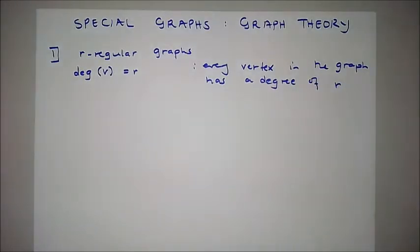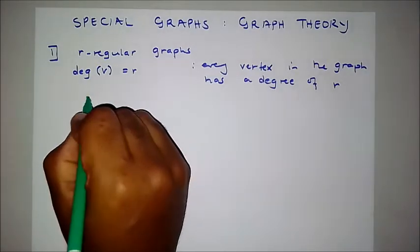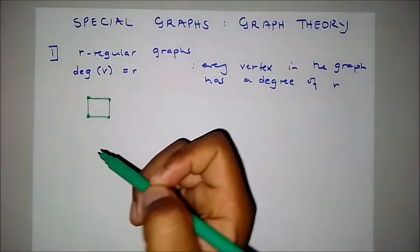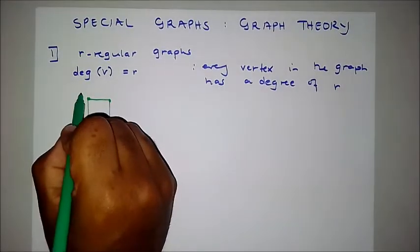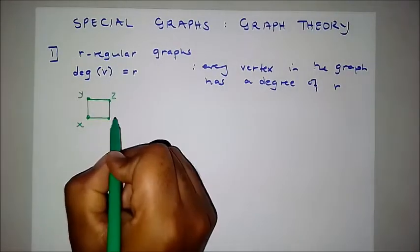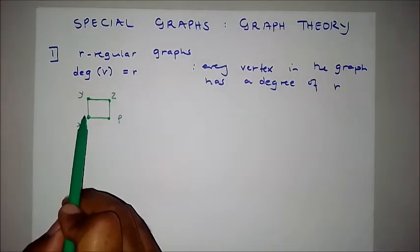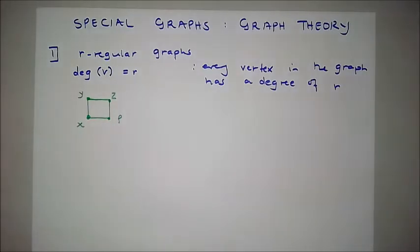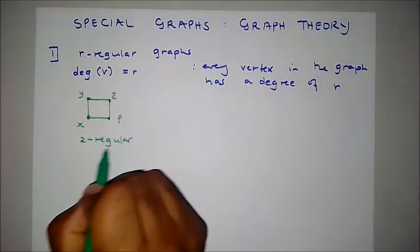Let's look at an actual graph. The dots are vertices and the lines are called edges. We've got a graph with vertices x, y, z, and p. The degree of vertex x is 2, degree of vertex z is 2, degree of vertex p is 2, and degree of vertex y is 2. So this is a two-regular graph.